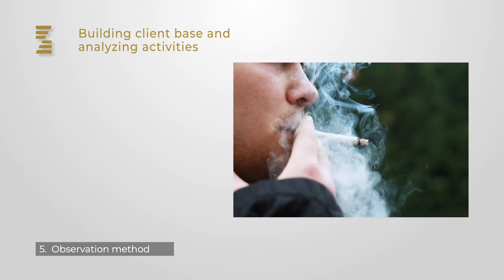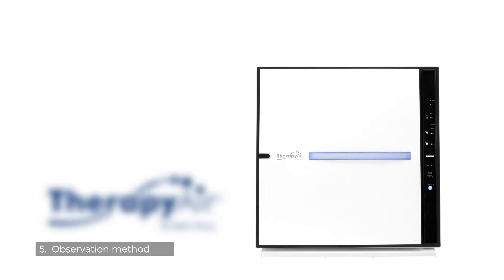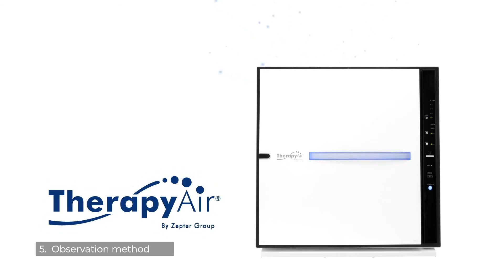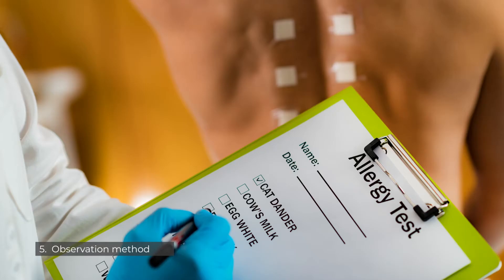If you hear that a wife complains that her husband smokes in the apartment and that this represents a danger for her and the kids, offer Therapy Air for a day or two for free testing so they can feel the difference. Another example: people with allergy, asthma, or other respiratory problems most likely affected by indoor air pollutants at home or at work — ask for their address and contact to submit accessories and make a presentation.